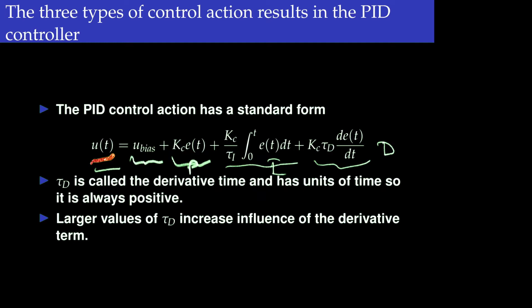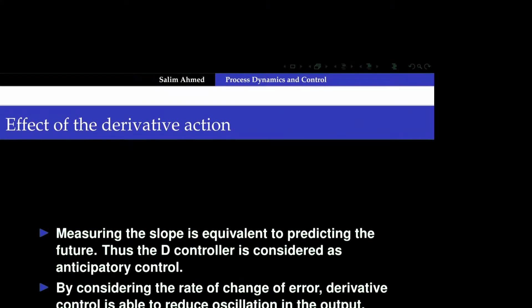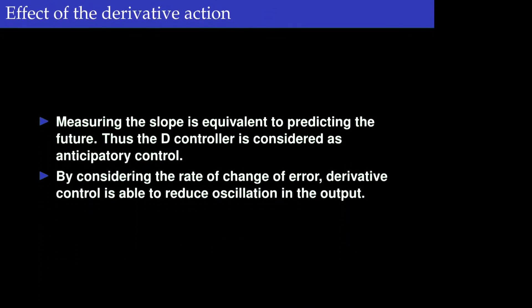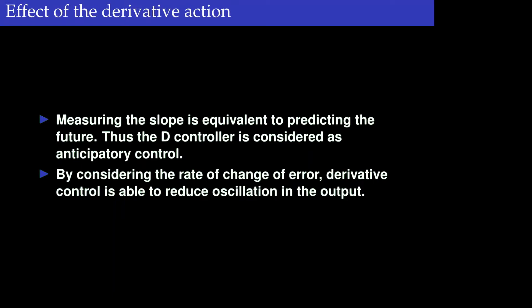For the derivative term we use tau_d, which is called the derivative time — it has units of time and is always positive. Large values of tau_d increase the influence of the derivative term. For the integral action, as tau_i increases (since it's in the denominator) the effect of integral action decreases, but for derivative time, since it's in the numerator, the control action increases with increasing derivative time.